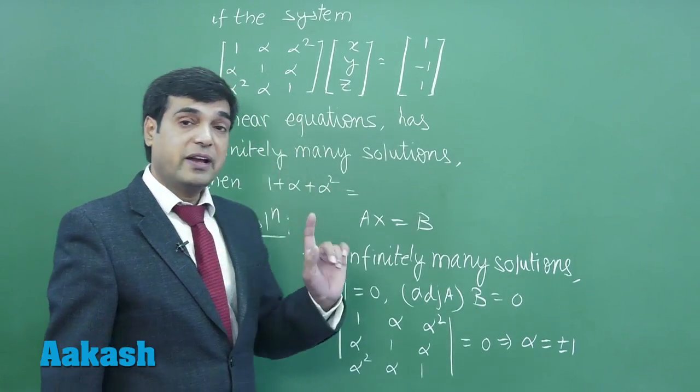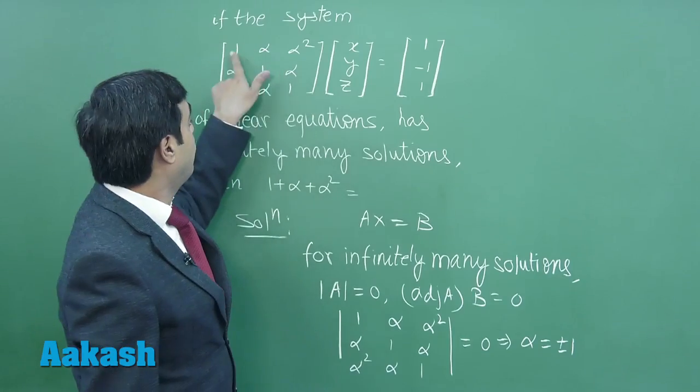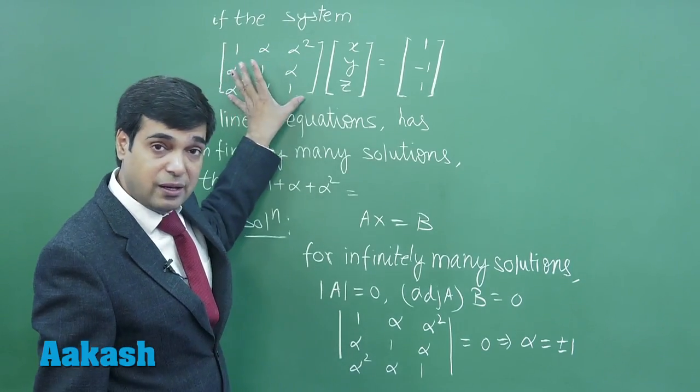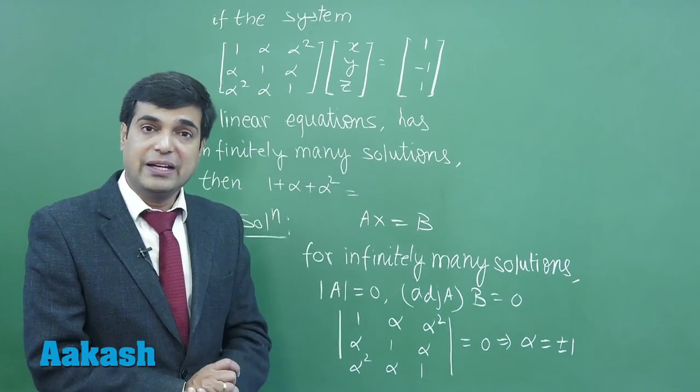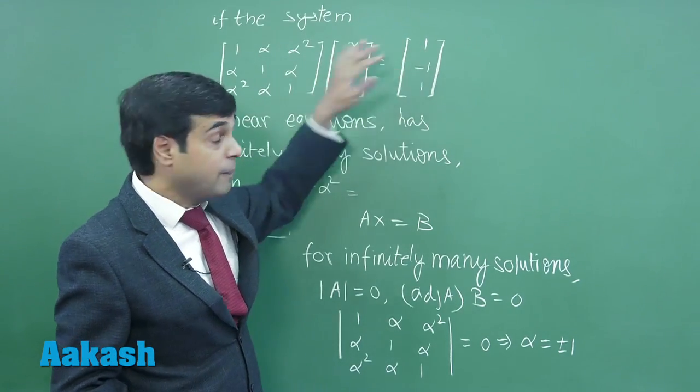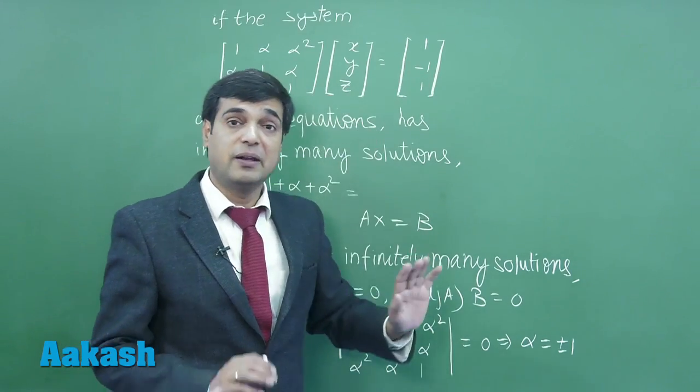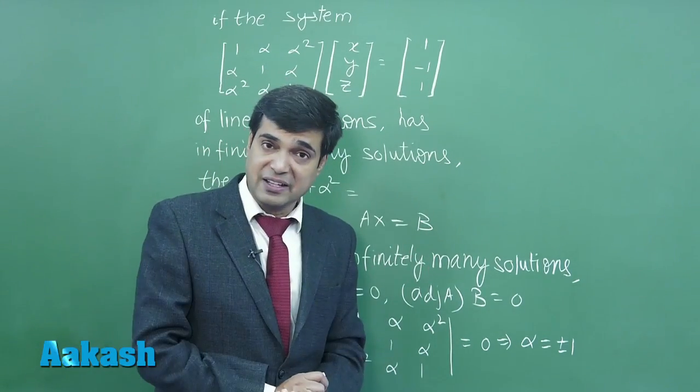If we have alpha value 1, consider, then what is the system of equation? The equations become: x + y + z = 1, x + y + z = -1, and x + y + z = 1. This implies the system of equations is inconsistent.